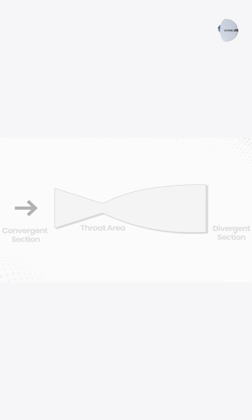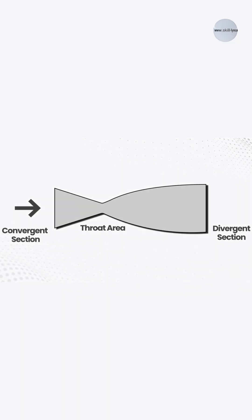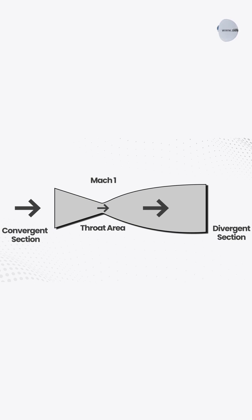The nozzle is designed in such a way that the flow attains a sonic speed of Mach 1 at the throat. In the divergent section, the sonic flow encounters an increasing cross-sectional area that rapidly expands it.